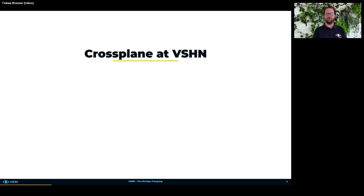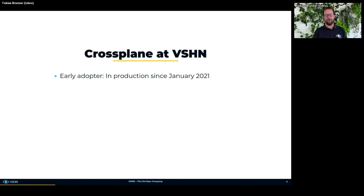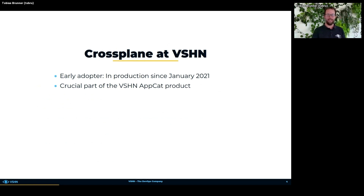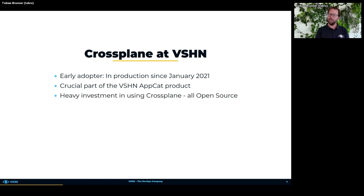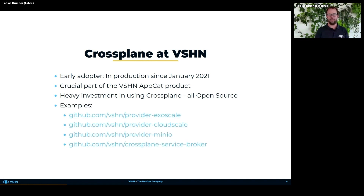Now let's dive into Crossplane. We have been using Crossplane since January 2021 in production. The initial project started in mid-2020, and it's a very crucial part of our product, VSHN AppCat, which I'll introduce shortly. We do heavy investment in using Crossplane and we also contribute back to the community. We already have three providers written by ourselves and provided to the community, plus an integration to the Open Service Broker API.